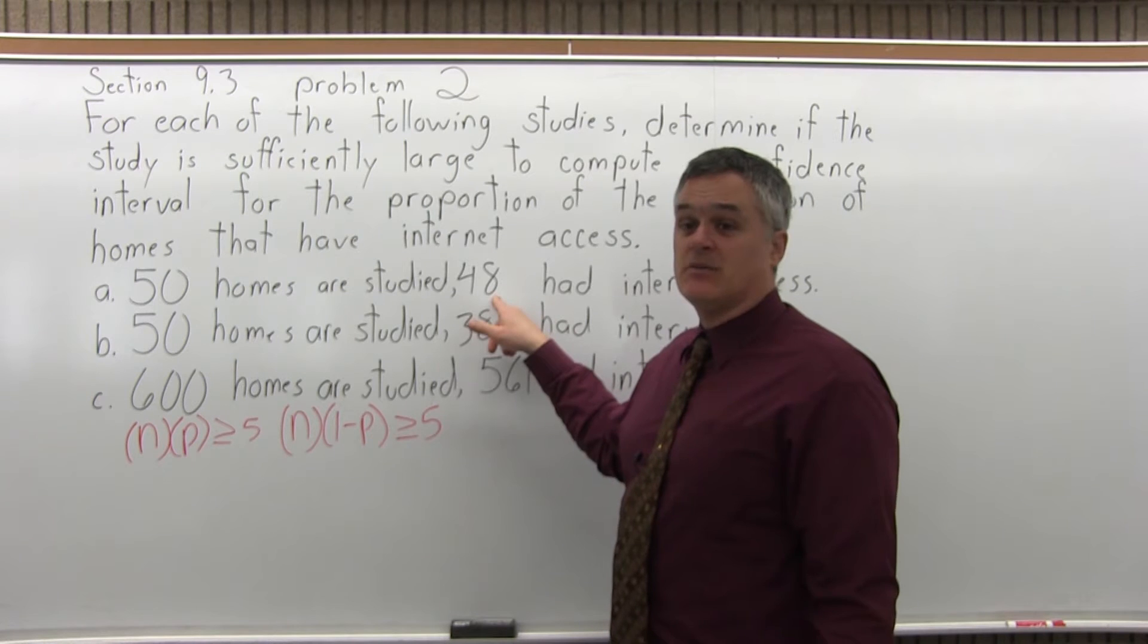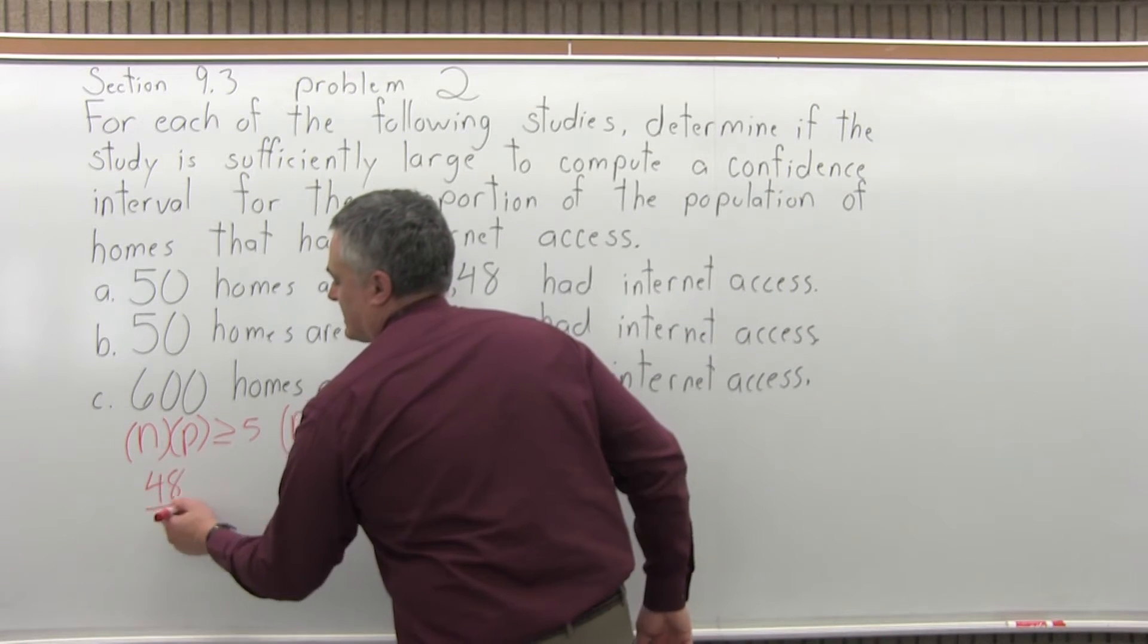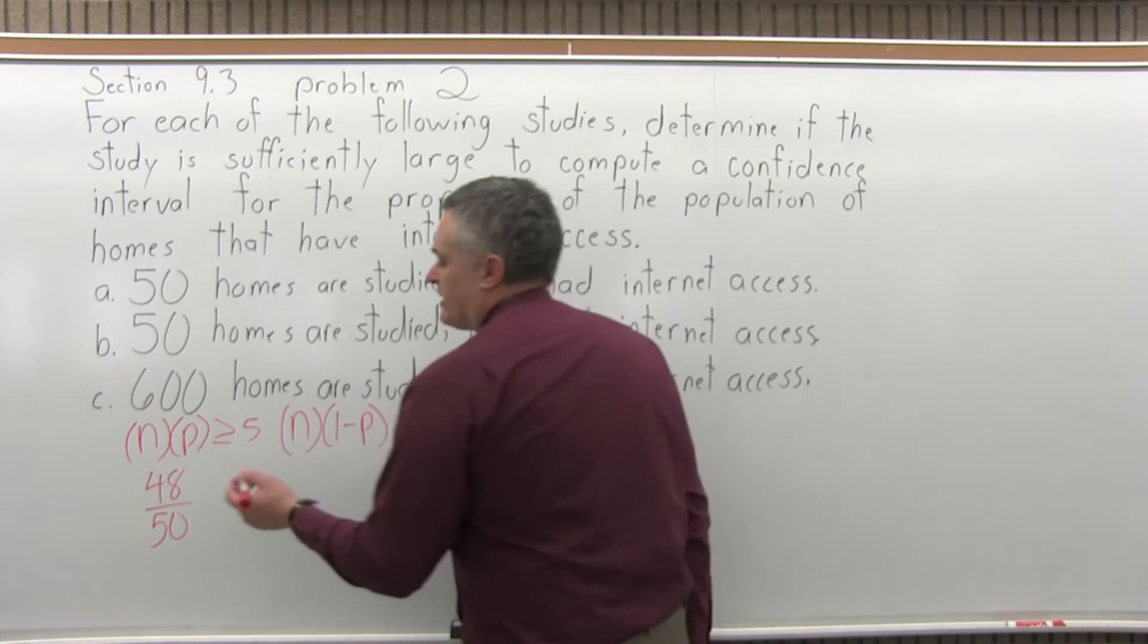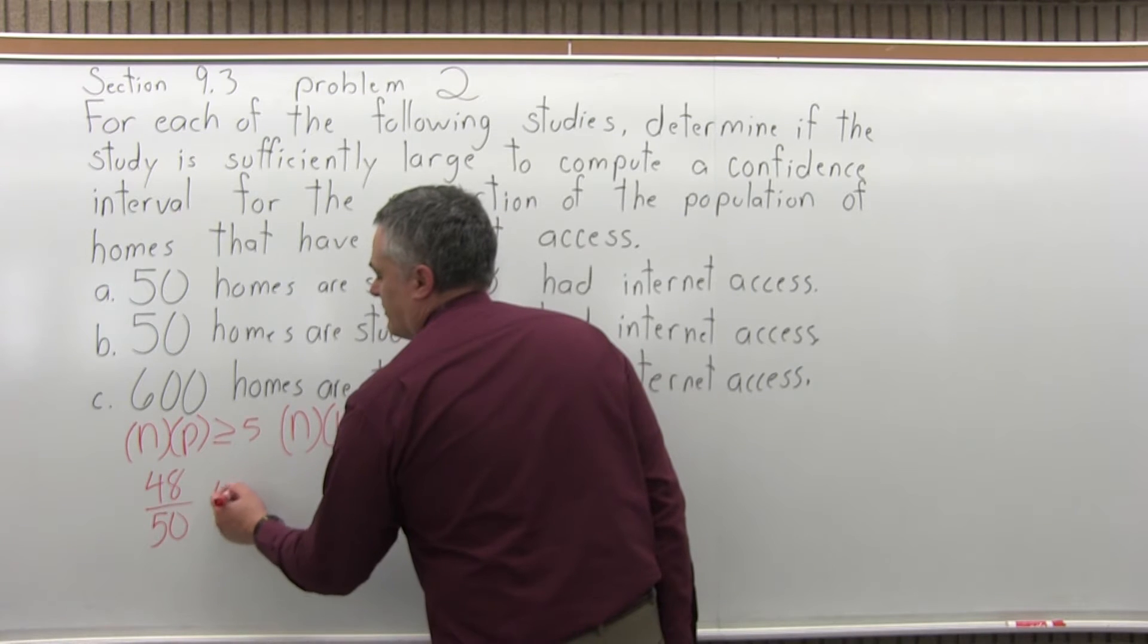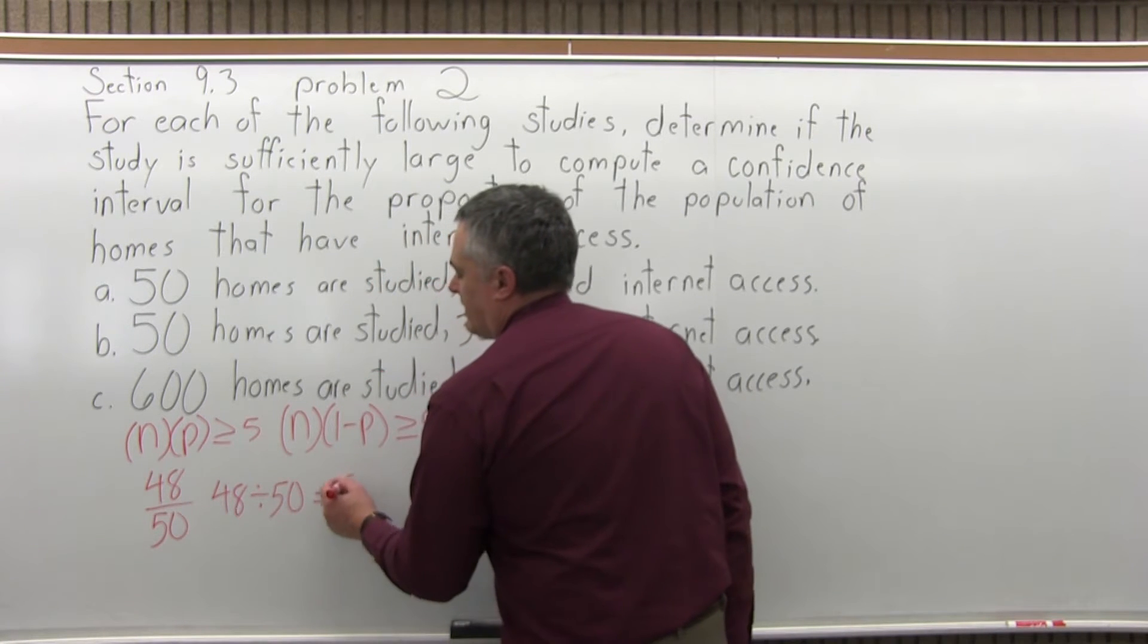First, let's estimate p. What is p, or p hat, we would call it. So, 48 is the number of successful results over the total number of trials is 50. So, with the calculator, you can divide that out. 48 divide by 50 will be .96.